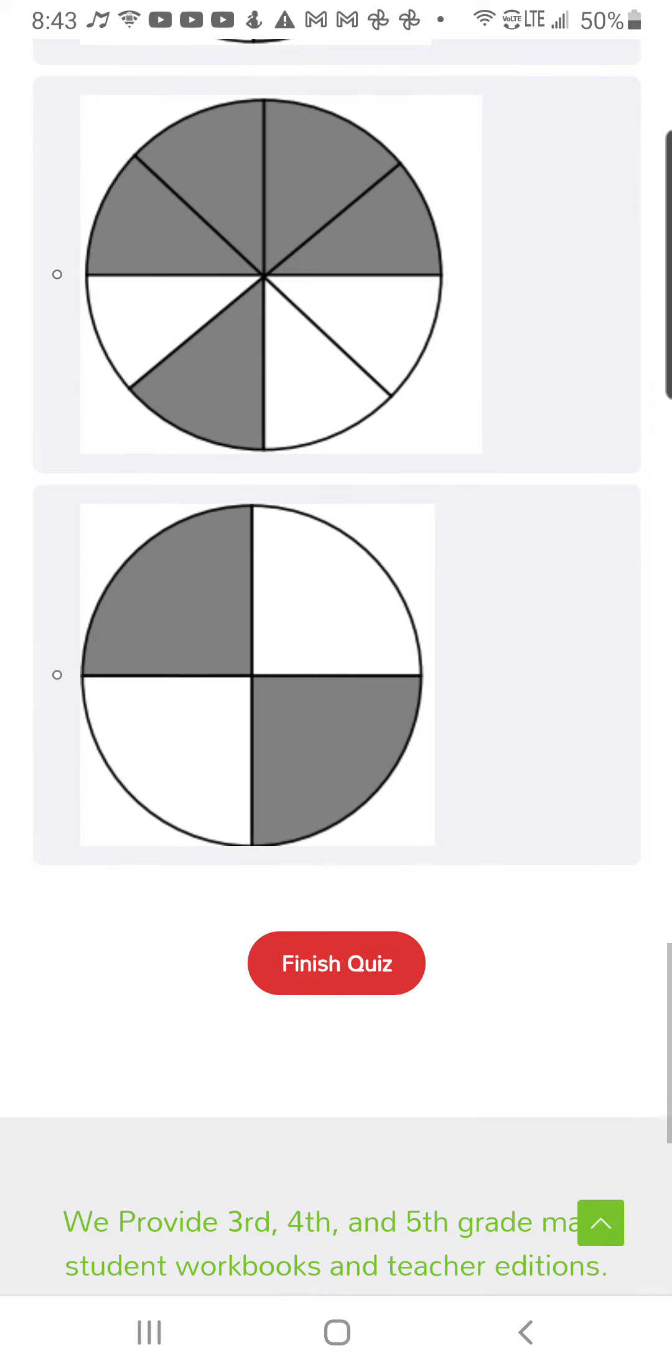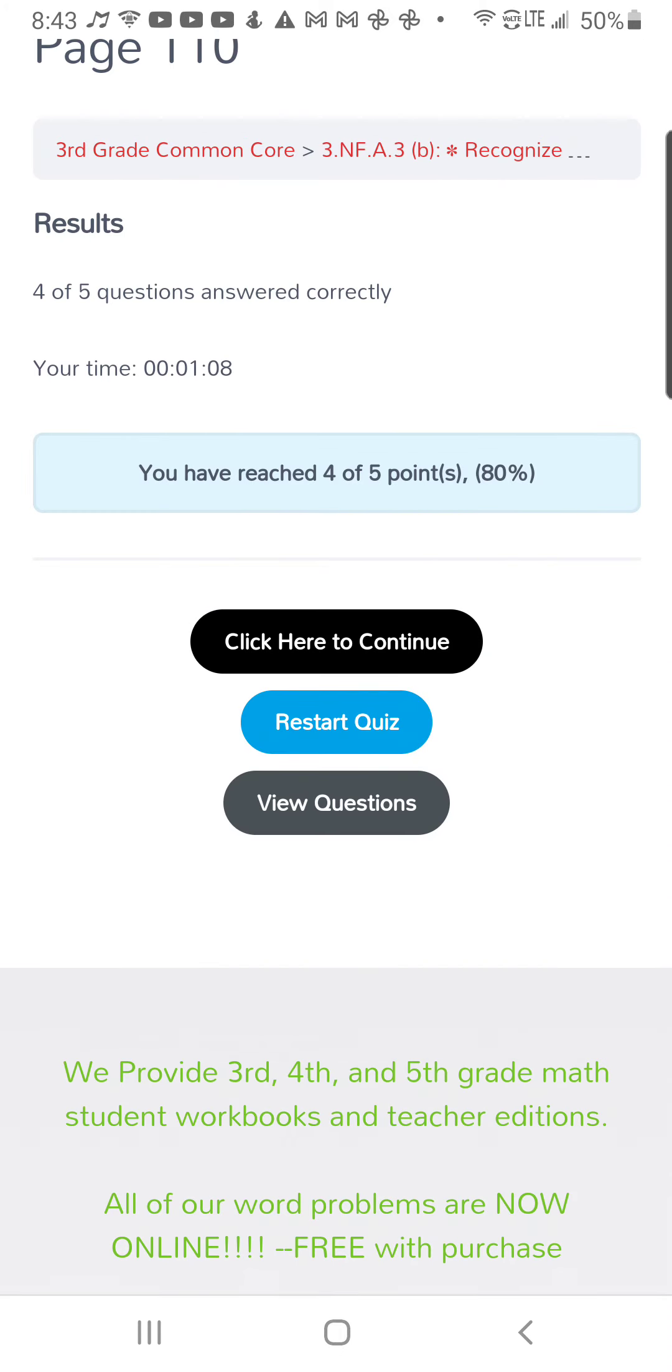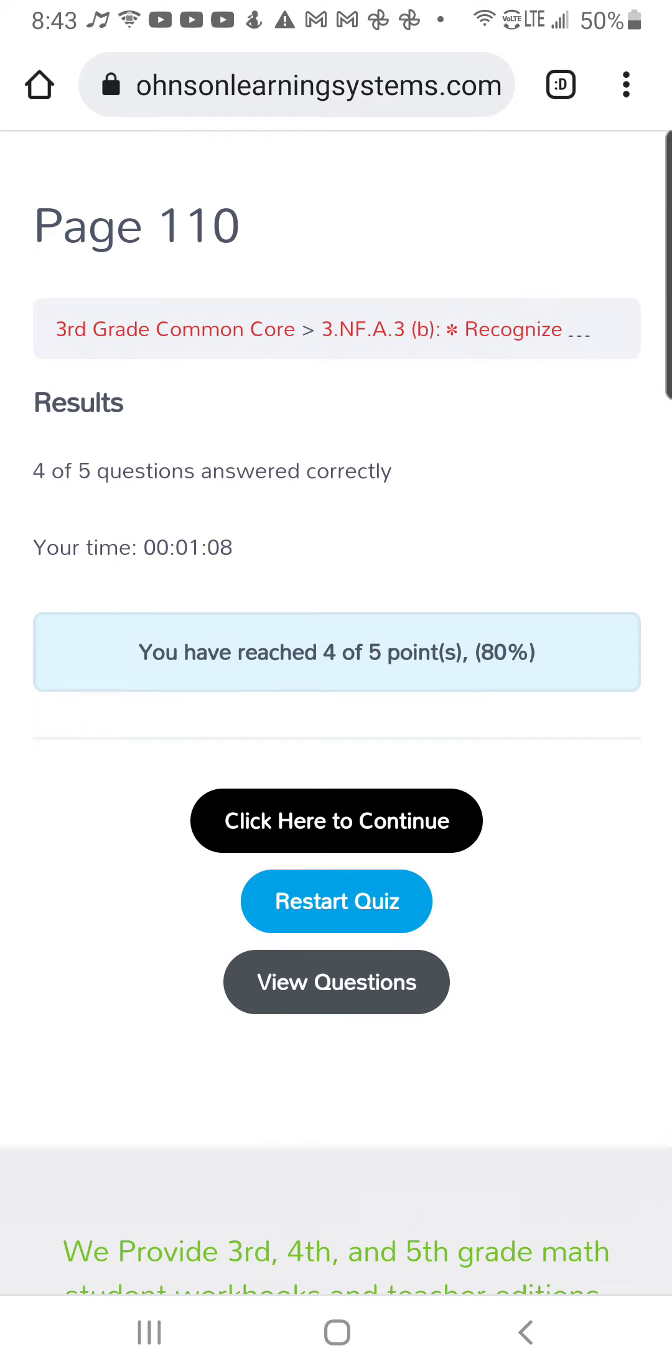And when you click finish quiz, your grade should come up four or five right. You can see the student was on there for one minute and eight seconds. $9.99, johnsonlearningsystems.com. Let's go.